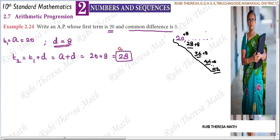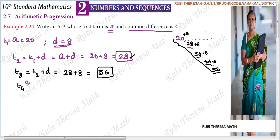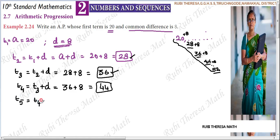Step-wise, for 2-mark and 5-mark questions: second term is first term plus common difference, A plus D equals 20 plus 8 equals 28. Third term is T2 plus D: 28 plus 8 equals 36. T4 equals T3 plus D: 36 plus 8 equals 44. Fifth term T5 equals T4 plus D: 44 plus 8 equals 52.